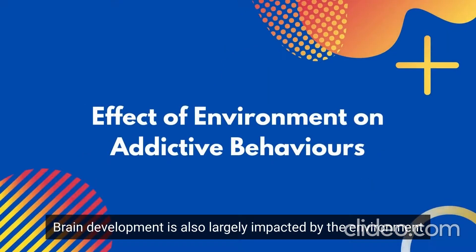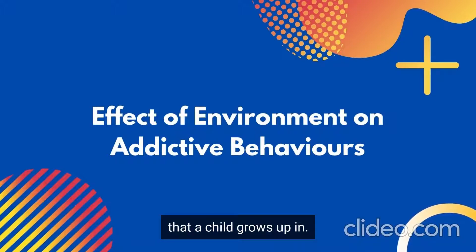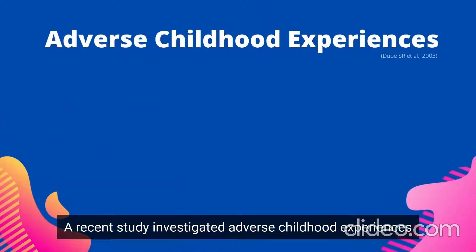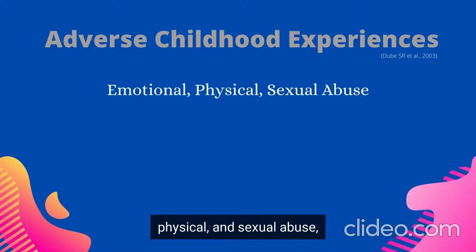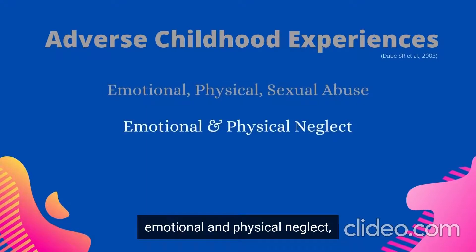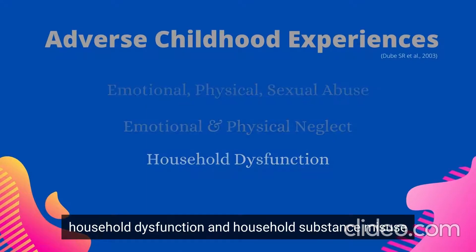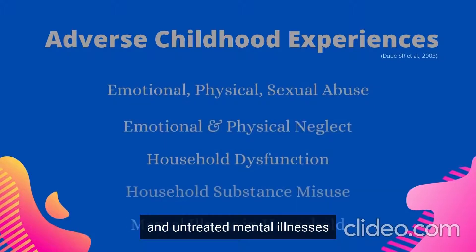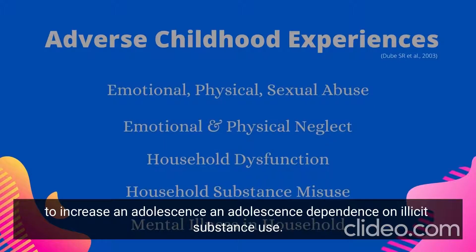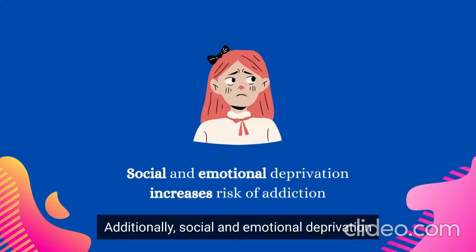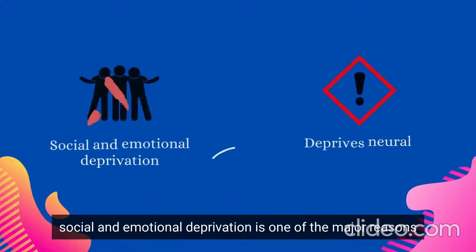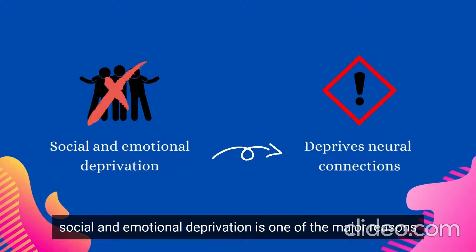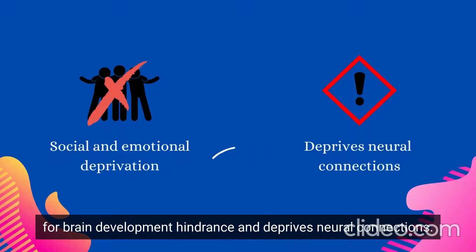Brain development is also largely impacted by the environment a child grows up in. A recent study investigated adverse childhood experiences and illicit substance use, revealing that emotional, physical, and sexual abuse, emotional and physical neglect, household dysfunction, household substance misuse, and untreated mental illnesses all increase adolescent dependence on illicit substances. Additionally, social and emotional deprivation increases the risk of addiction among adolescents and is one of the major reasons for brain development hindrance and deprived neural connections.